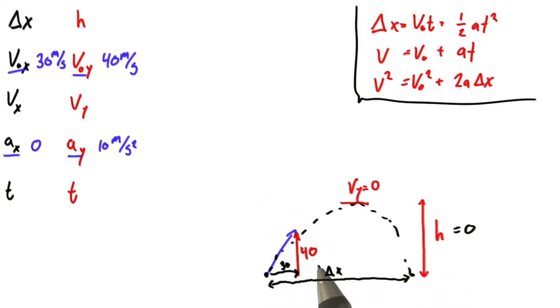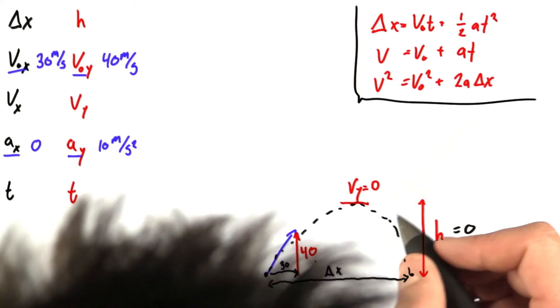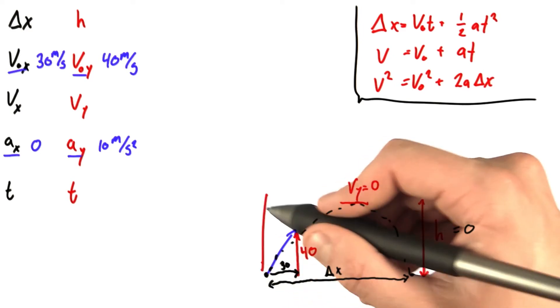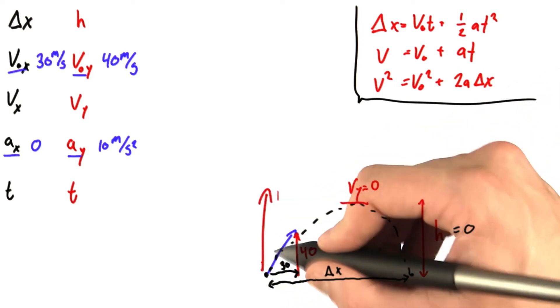It's also true that an object spends just as much time going up in its trajectory as it does going down. That's not something I'm going to prove for you here, but it's something you should definitely talk about in the forums. What's also true is that when a ball starts and ends from the same altitude, same height, it takes the exact same amount of time to go up as it does to go down. We could say t up equals t down.